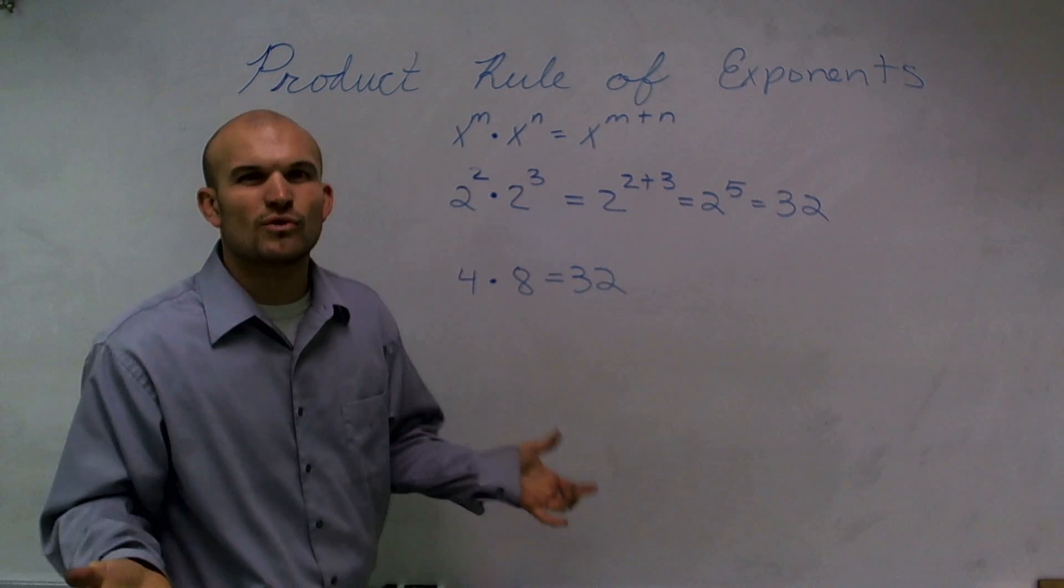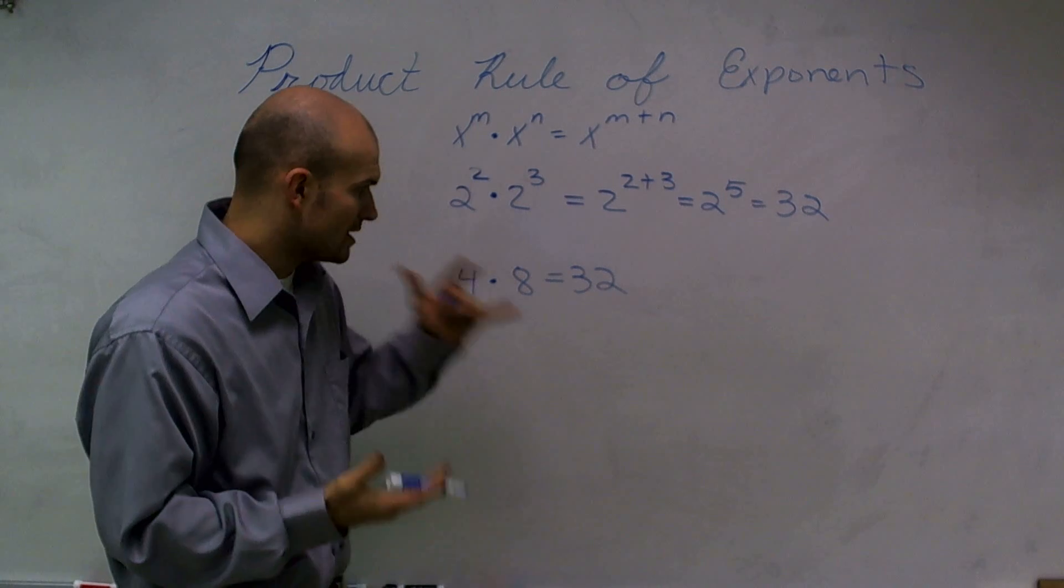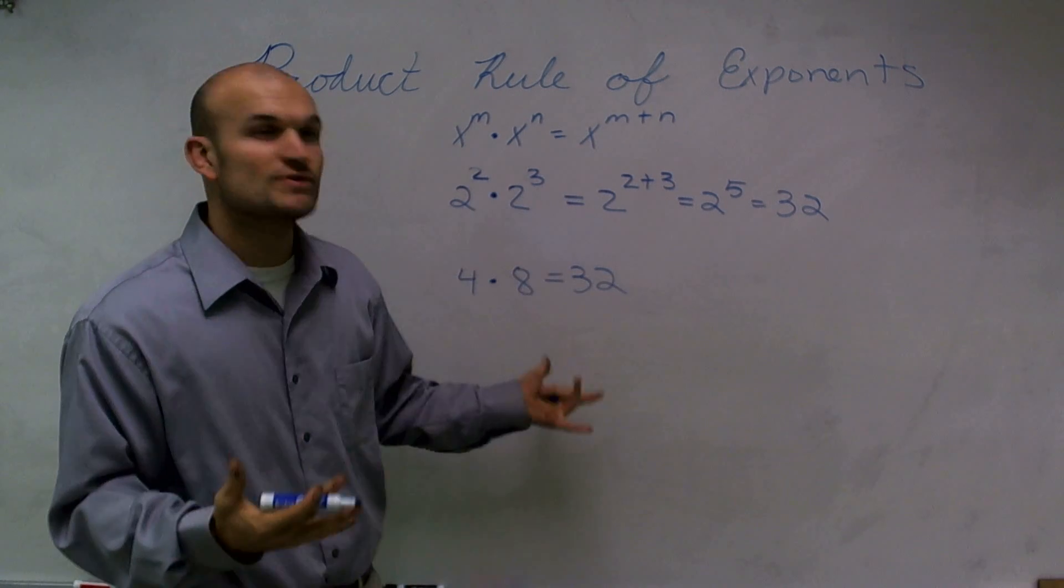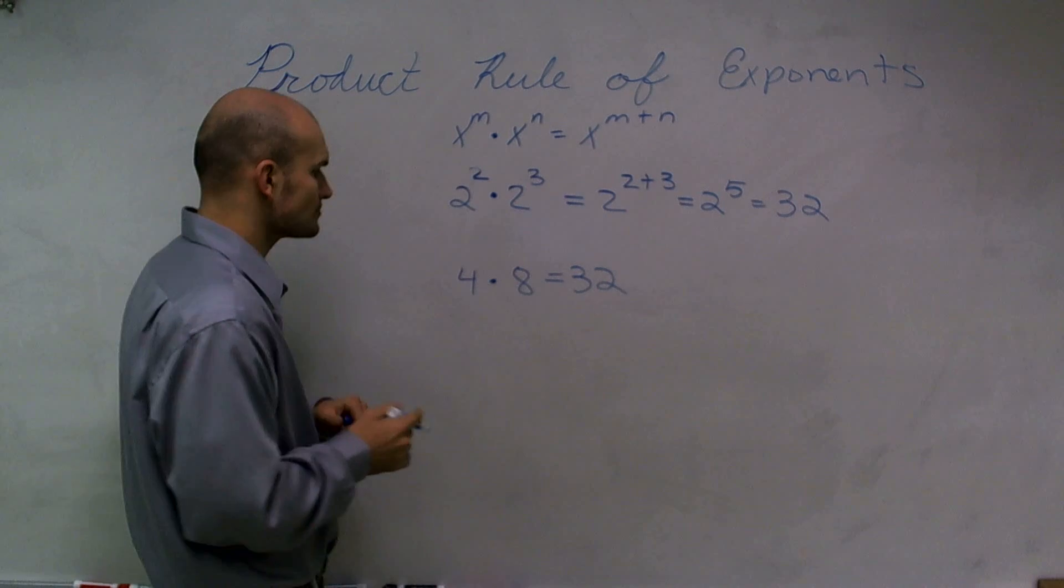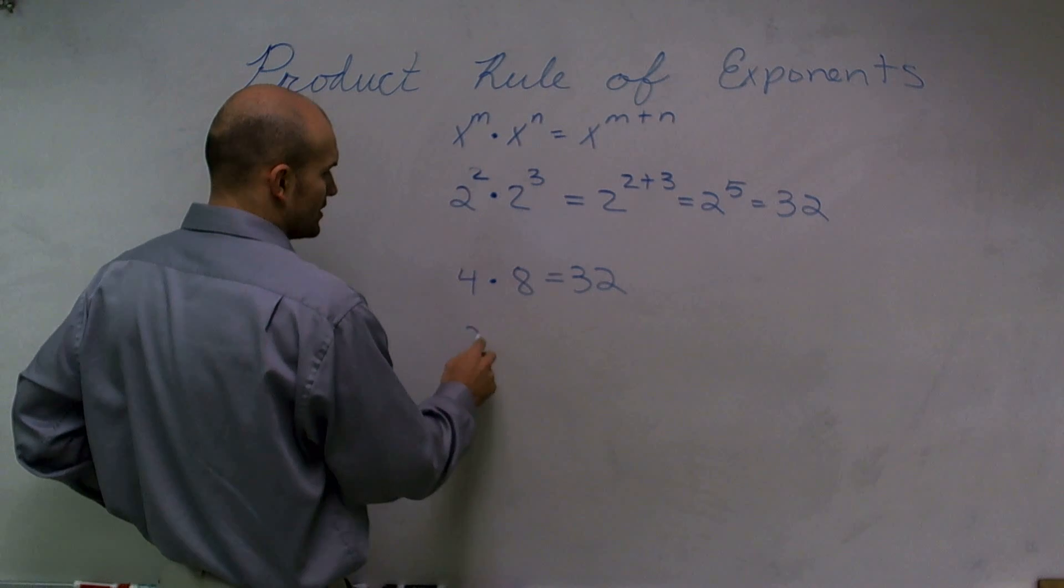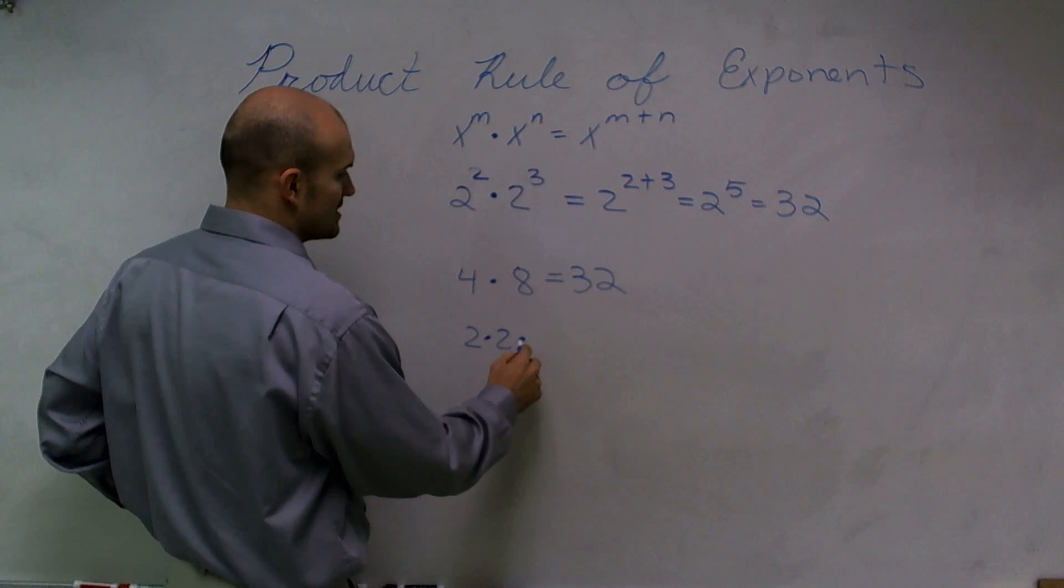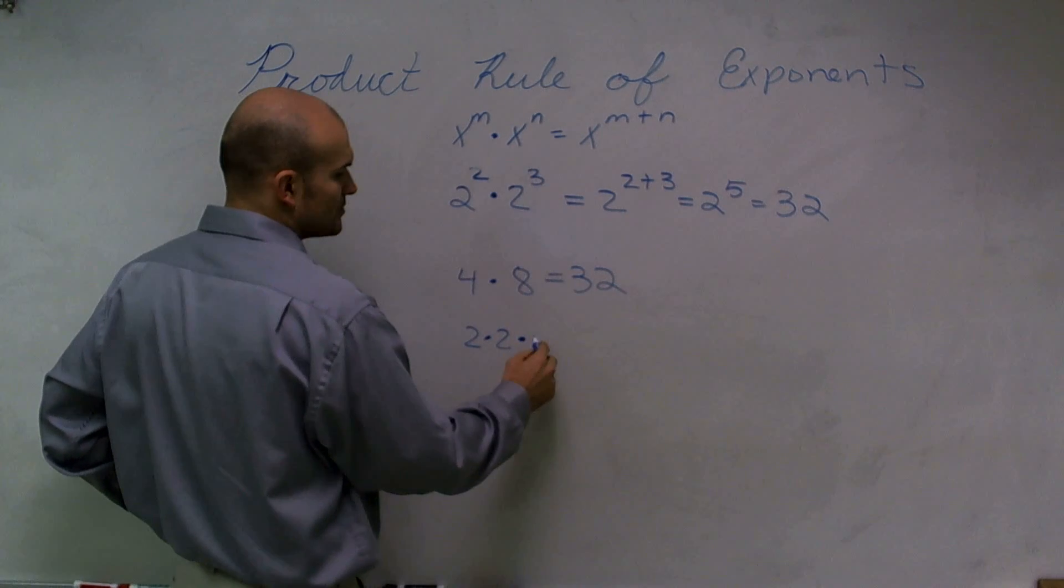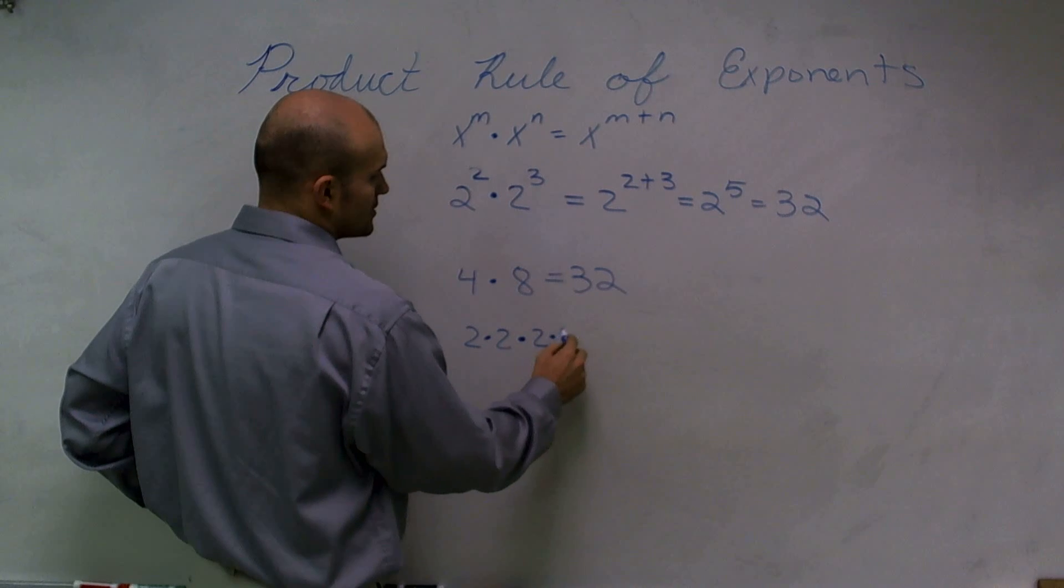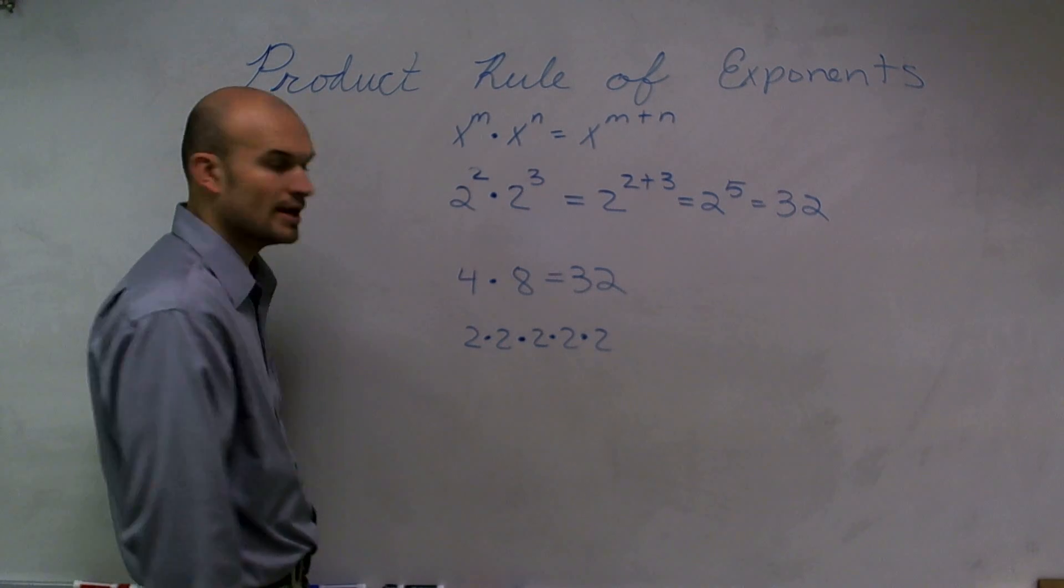Now, I just want to show you just one more example how to show this to go through to maybe prove to you why we can use the product rule of exponents. We know that 2 squared is equivalent to 2 times 2, times 2 cubed would then be equivalent to 2 times 2 times 2.